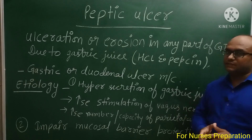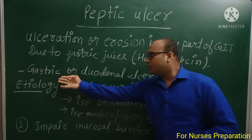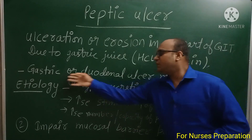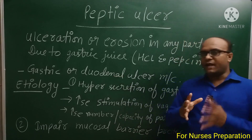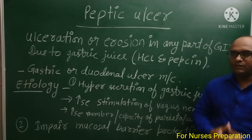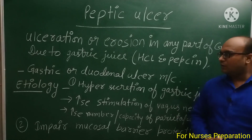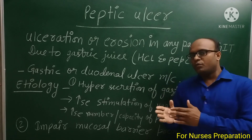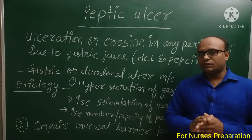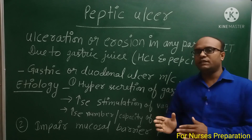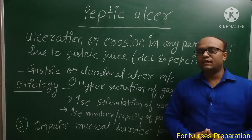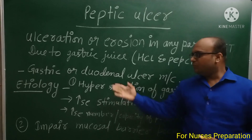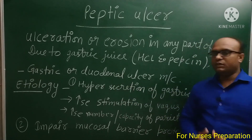Most commonly peptic ulcer कहाँ पाए जाते हैं? Gastric and duodenal ulcers are most common। Gastric region या duodenal region के अंदर पाए जाने वाले ulcers, most common peptic ulcer के उदाहरण हैं। हमारा duodenum part, stomach को jejunum से connect करता है। Duodenum, jejunum और ileum small intestine के parts हैं। Small intestine 5 मीटर लंबी structure होती है और duodenum की लंबाई approximately 25 cm होती है।